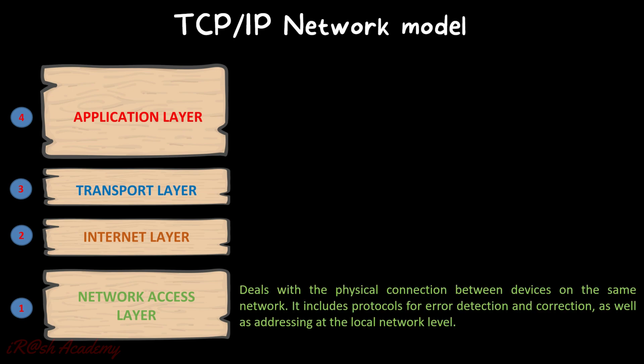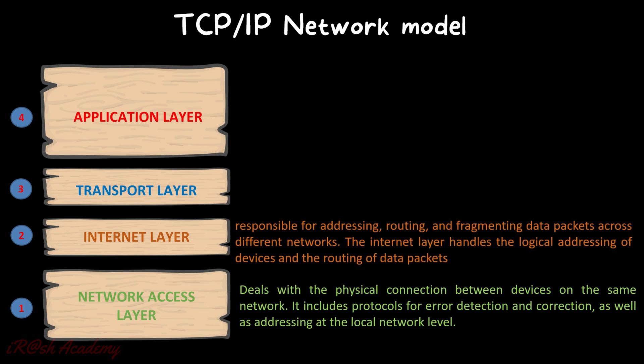The second layer is the Internet Layer. The Internet Layer is responsible for addressing, routing, and fragmenting data packets across different networks. It handles the logical addressing of devices and the routing of data packets. In any network, a device should have one logical address — called the IP address — to start communication. This layer also manages the routing function from one network to another network.